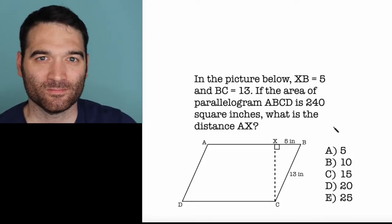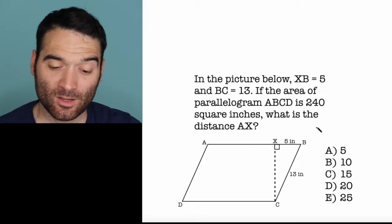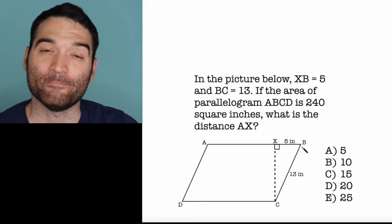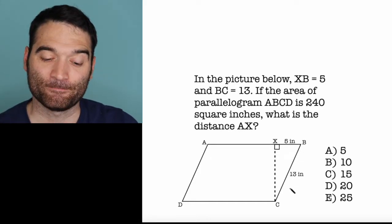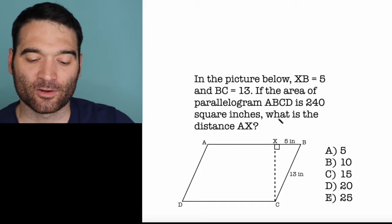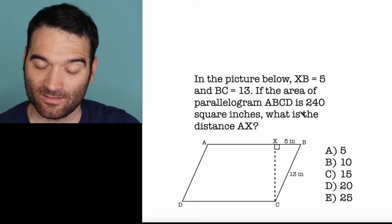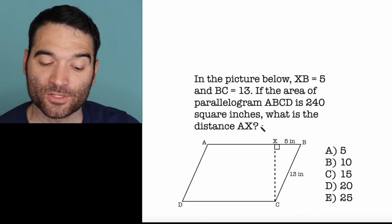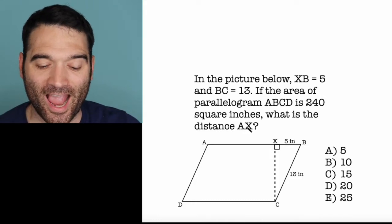Here's a GRE geometry question. Let's take a look. In the picture below, XB is equal to 5 and BC is equal to 13. If the area of parallelogram ABCD is 240 square inches, what is the distance AX?